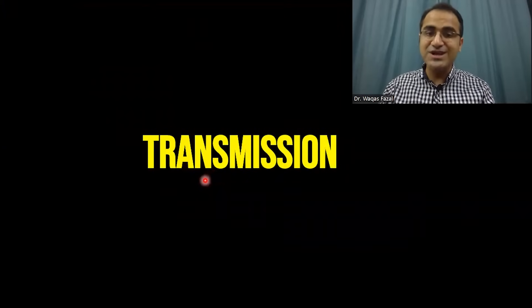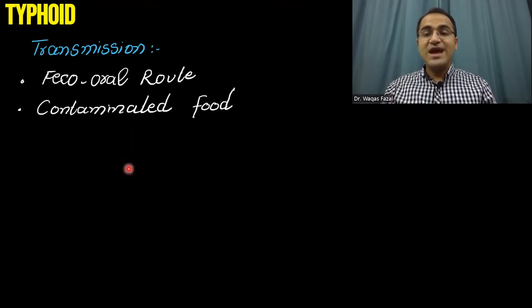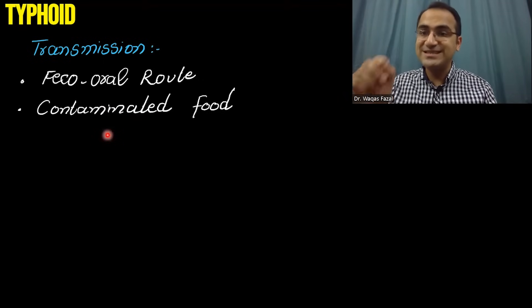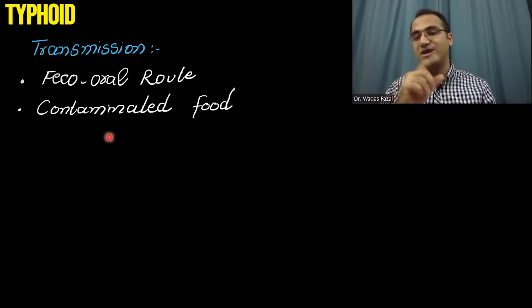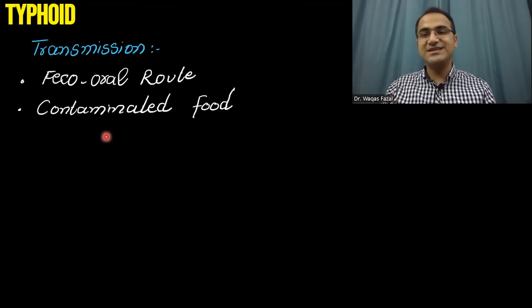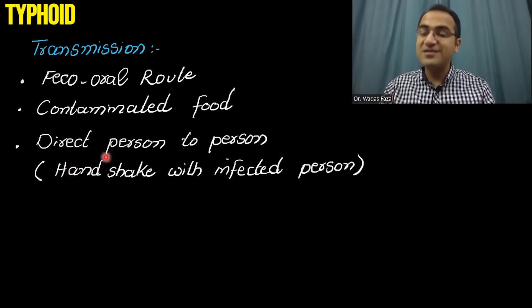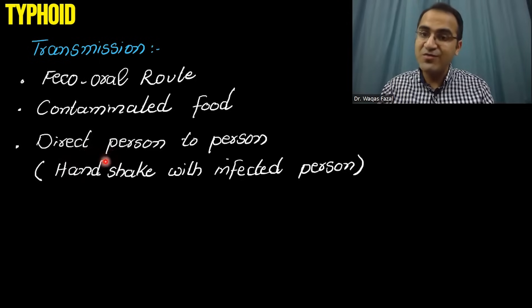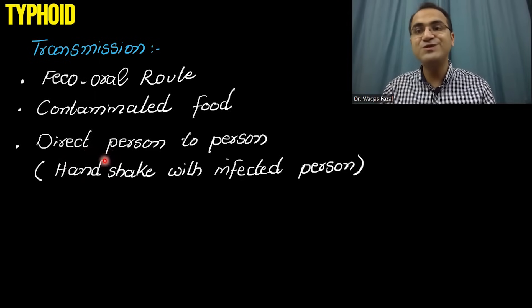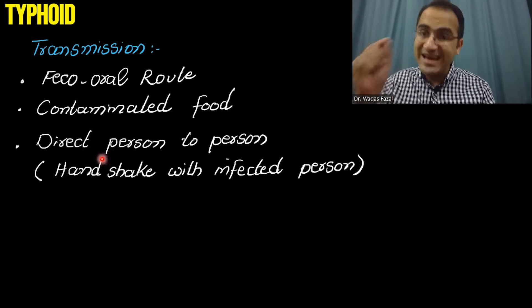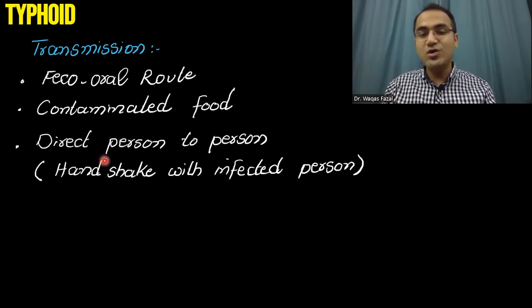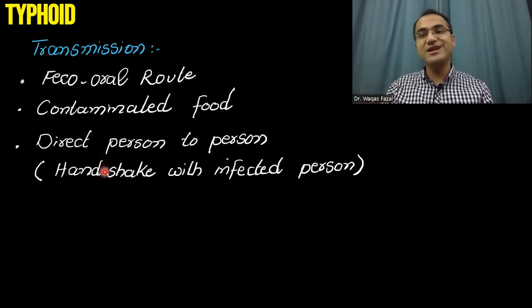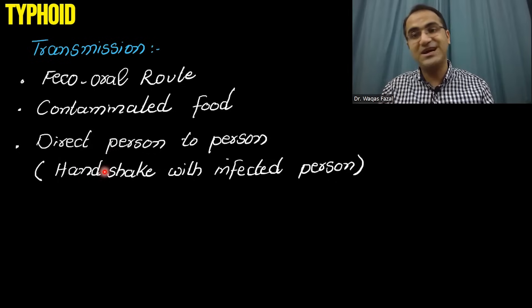Its transmission occurs via feco-oral route. Any food contaminated with the feces of a person containing Salmonella typhi can result in transmission of Salmonella, resulting in typhoid. Humans are the reservoir of Salmonella typhi, and any carrier of Salmonella can transmit it directly — even a handshake with an infected person can transmit typhoid.